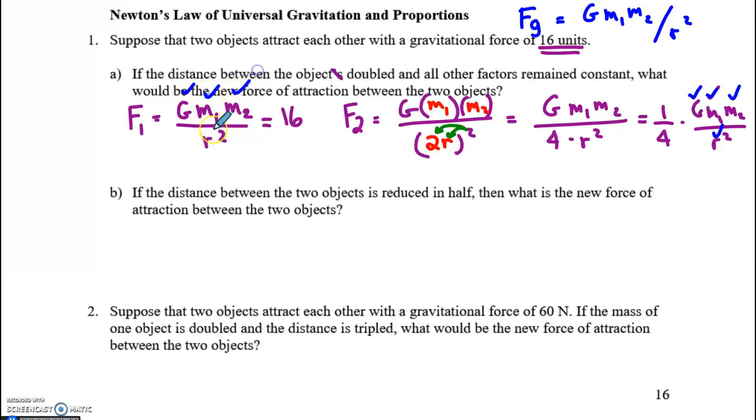But the original G times the original mass 1 times the original mass 2 over the original R squared is all equal to 16. So I am going to substitute in for this entire expression and say F2 is a quarter times 16, which gives me 4 units. Whatever the units are.